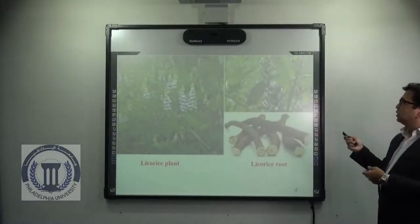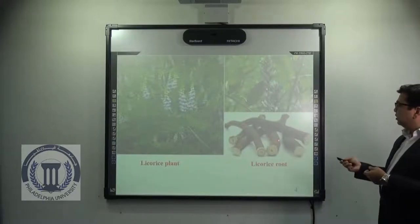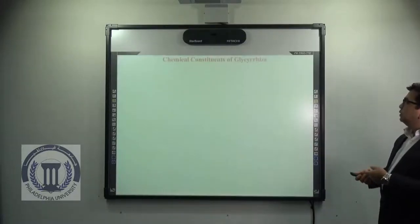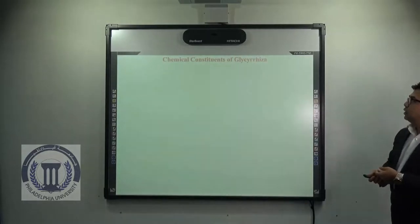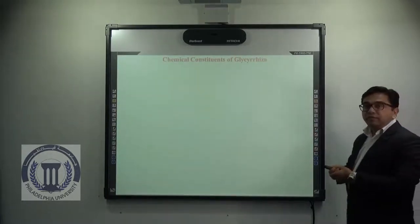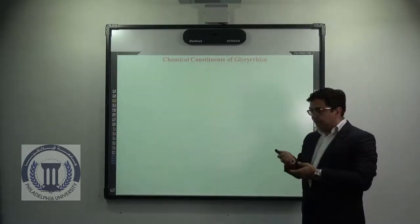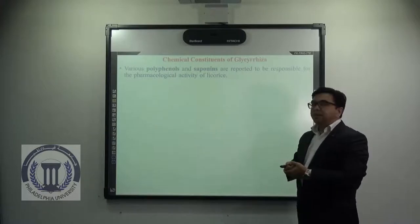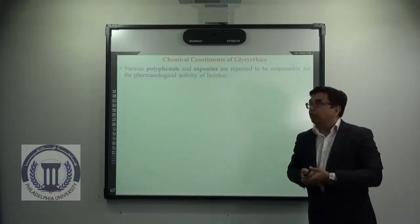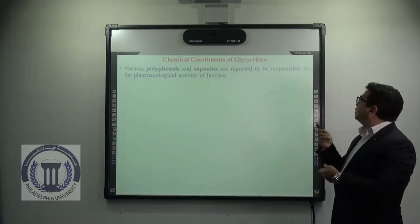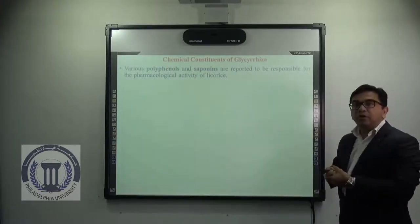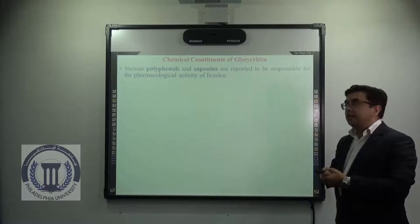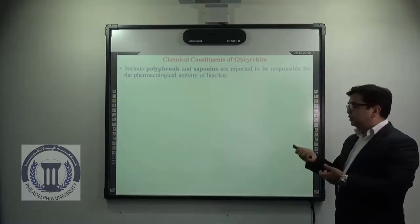This is the structure of the plant and this is the Glycyrrhiza root. Now coming to the chemical constituents of Glycyrrhiza, various polyphenols and saponins are reported to be responsible for the pharmacological activity of licorice roots.